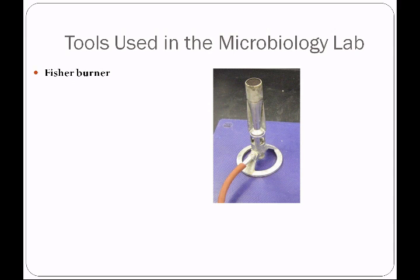We'll be using a number of tools in this lab. First is the fissure burner — it's not called a Bunsen burner, it's a fissure burner. It shoots out a flame about 1200 degrees Fahrenheit, so we must be very cautious when using it. You'll be sharing a fissure burner with the person immediately next to you, not across the table.